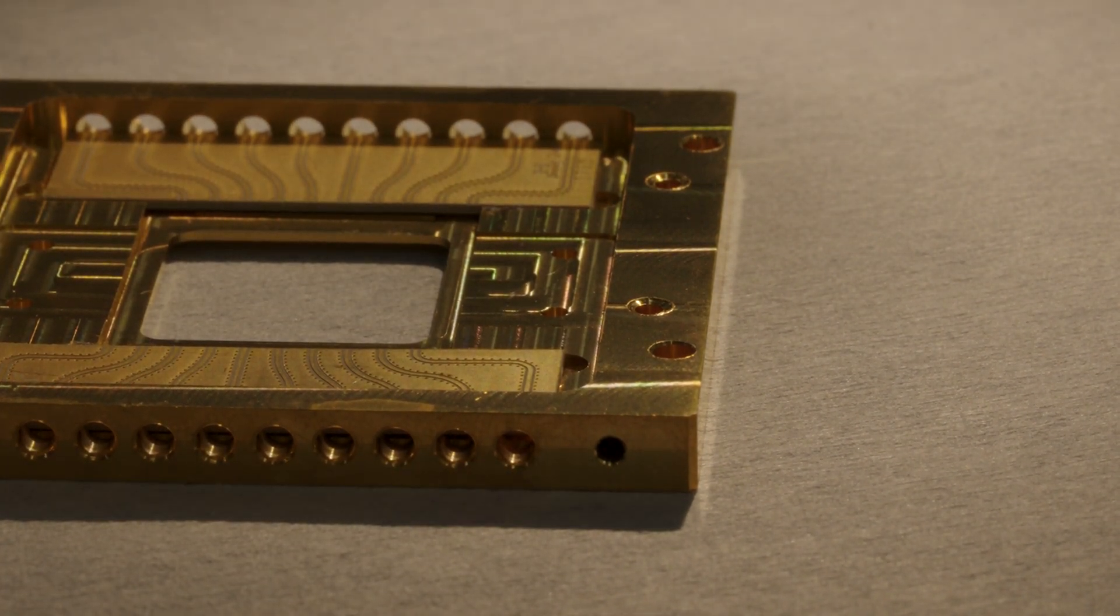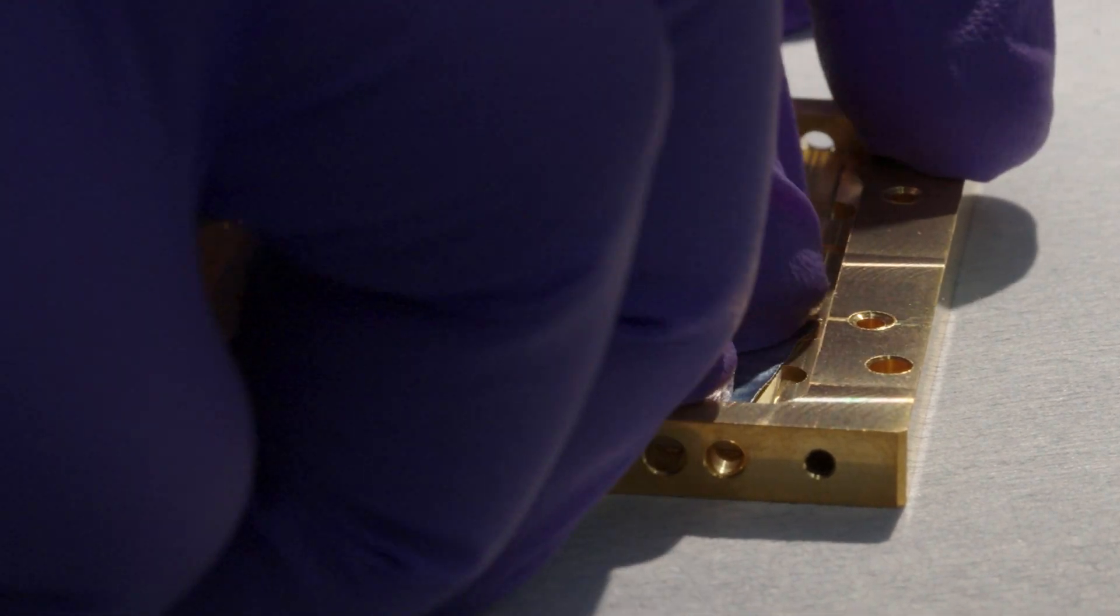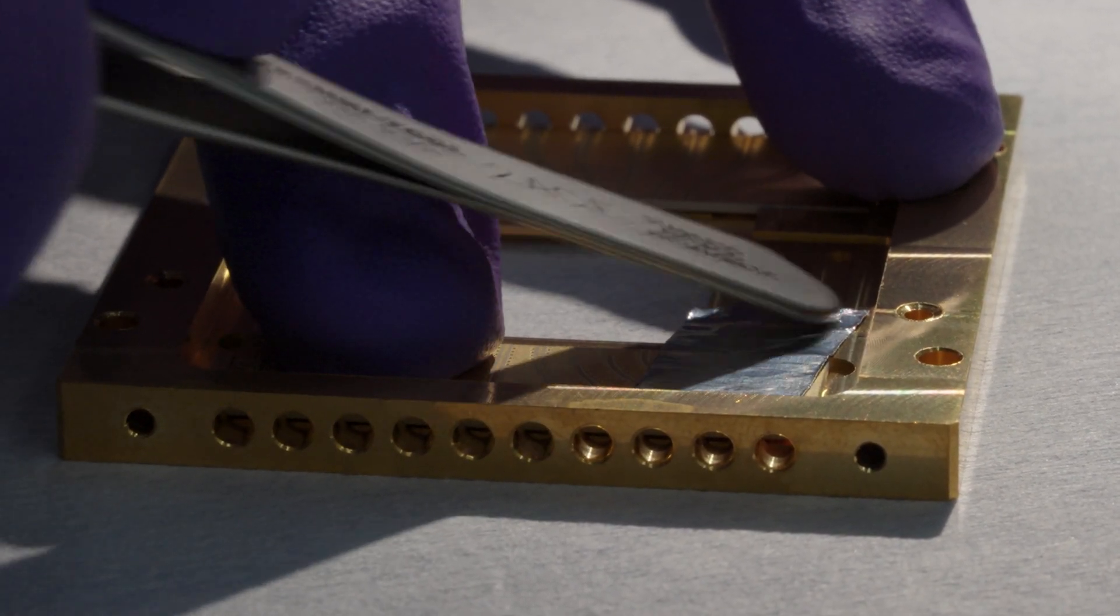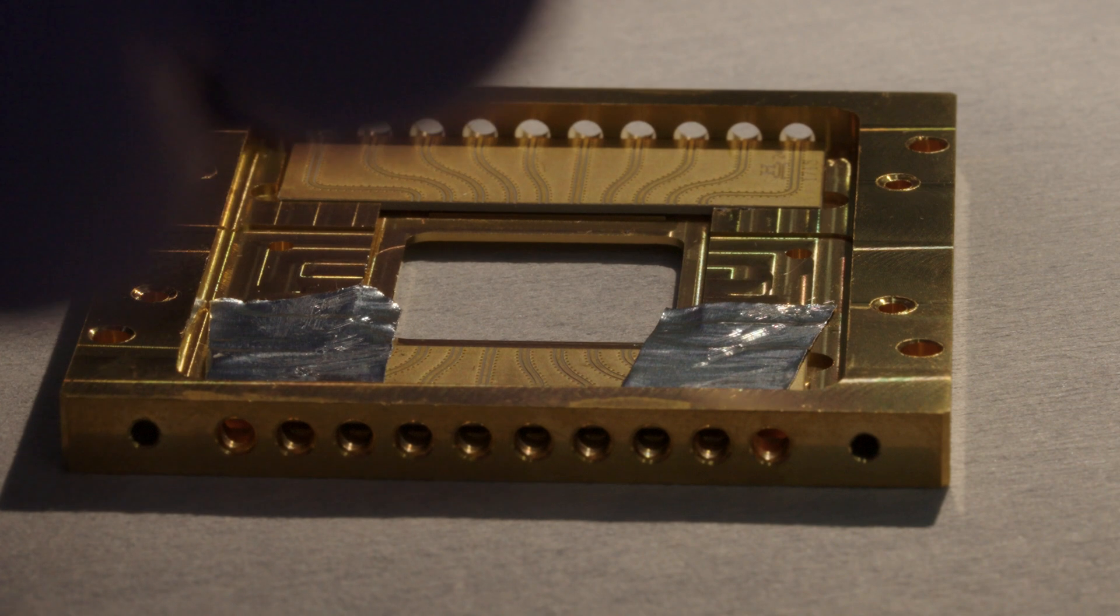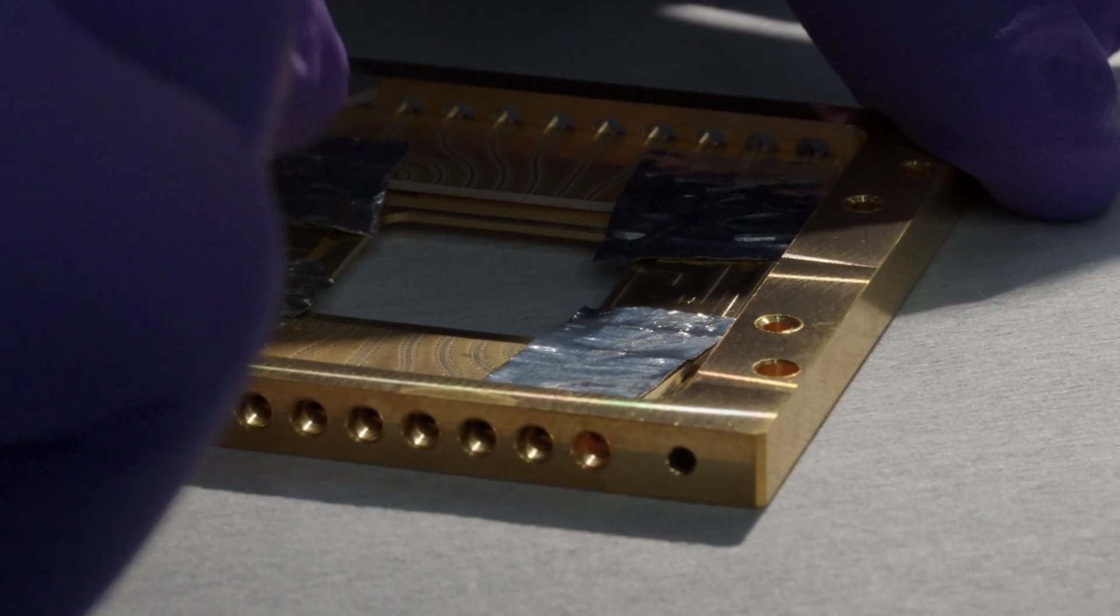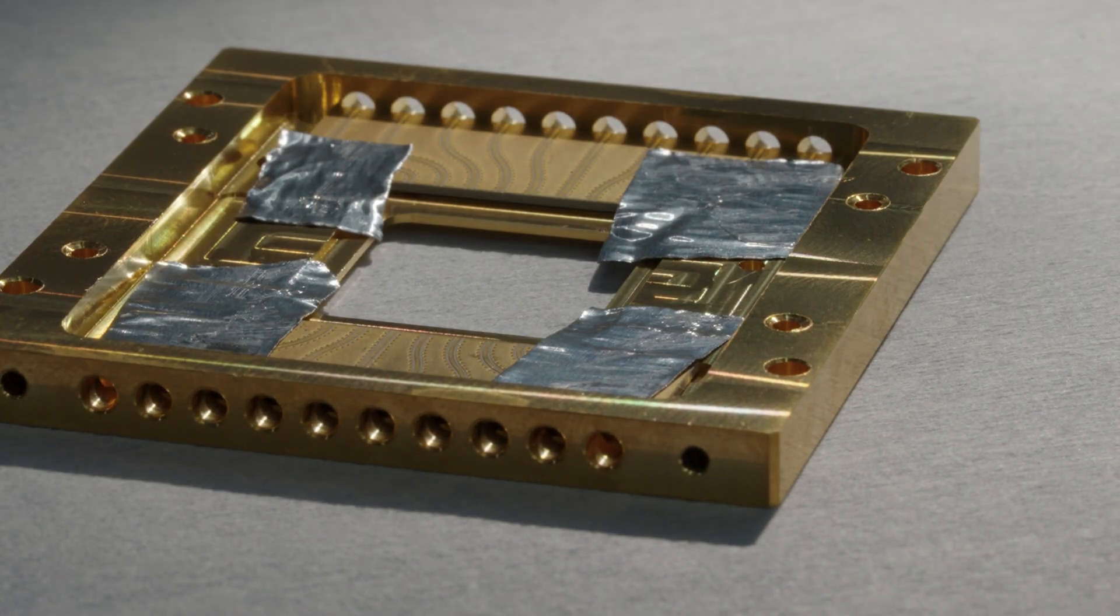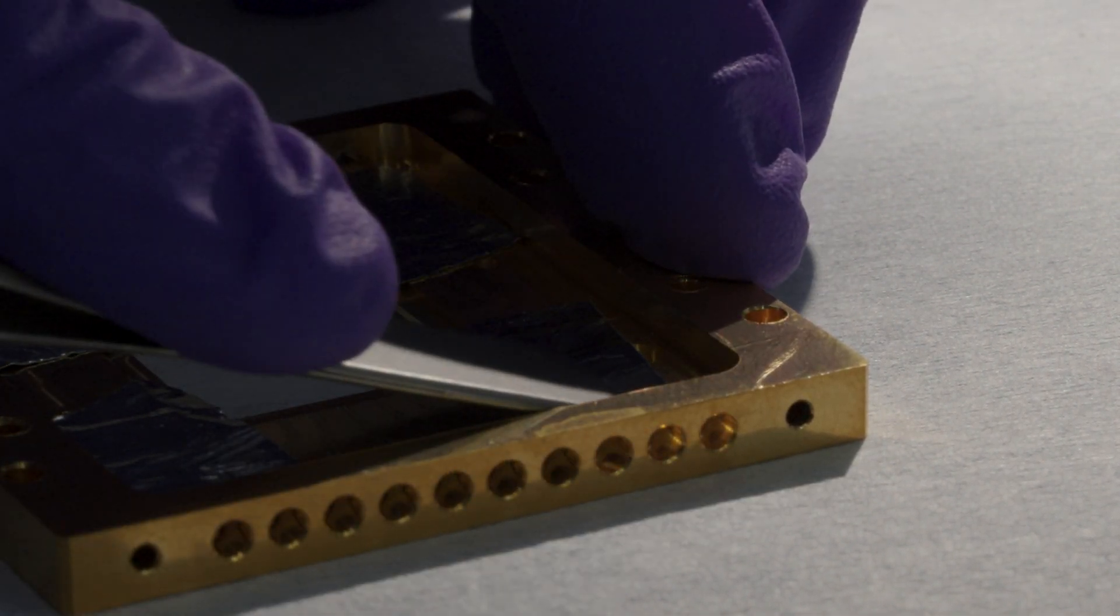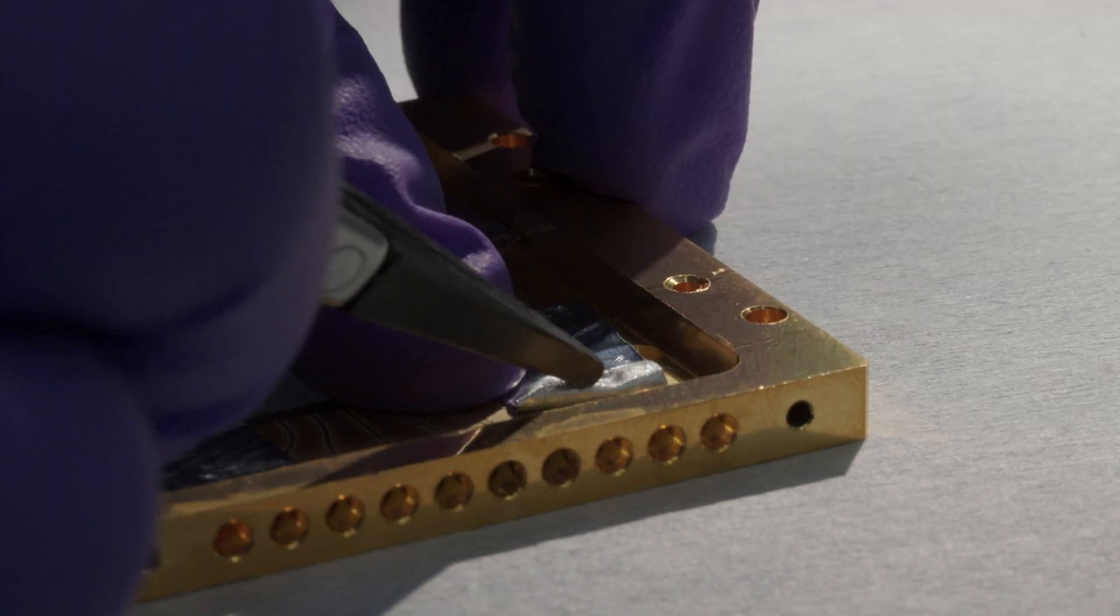So we like to use aluminum tape for this sort of thing. It's actually kind of pulling up on the transition board. That should be good.